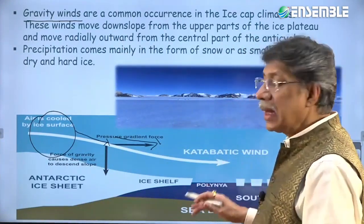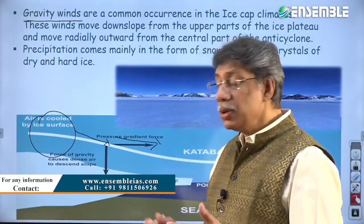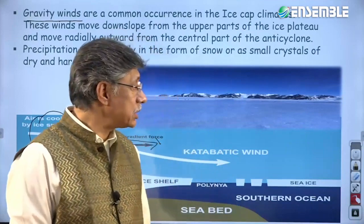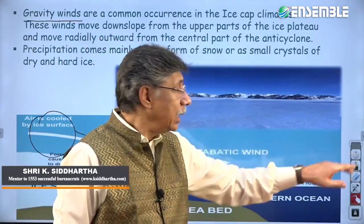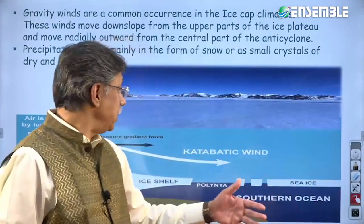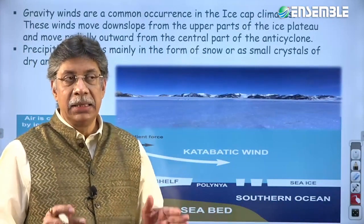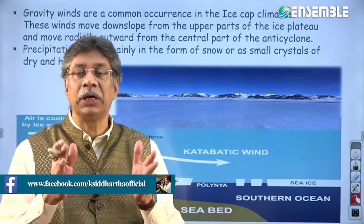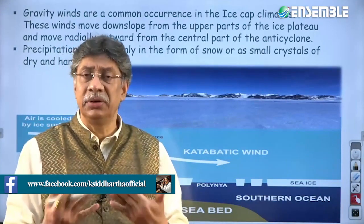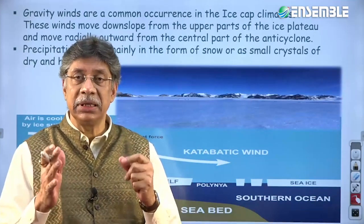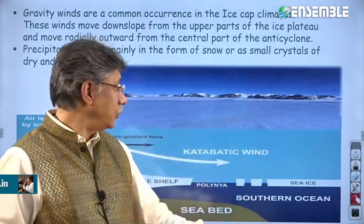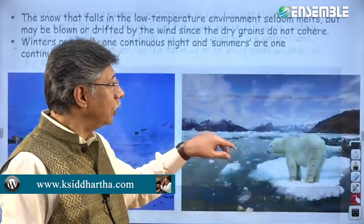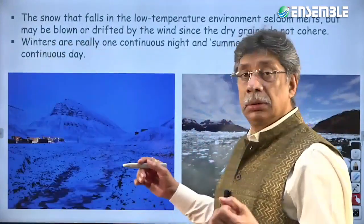Sometimes katabatic winds can pick up speeds of 100 to 150 kilometers per hour — that is a huge speed. Imagine a minus 50°C wind lashing the entire place at 150 km/h. This is a normal phenomenon in polar areas and is one of the reasons there is not much habitation there. The third feature is that this region allows accumulation of snow.